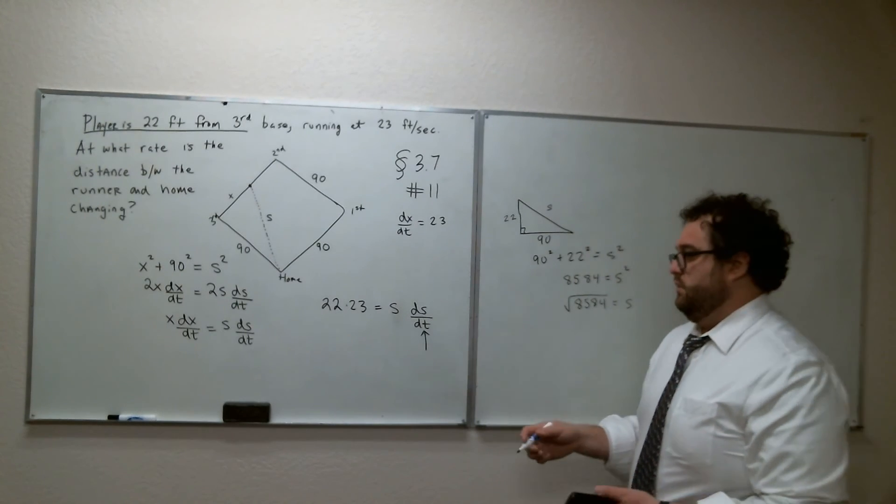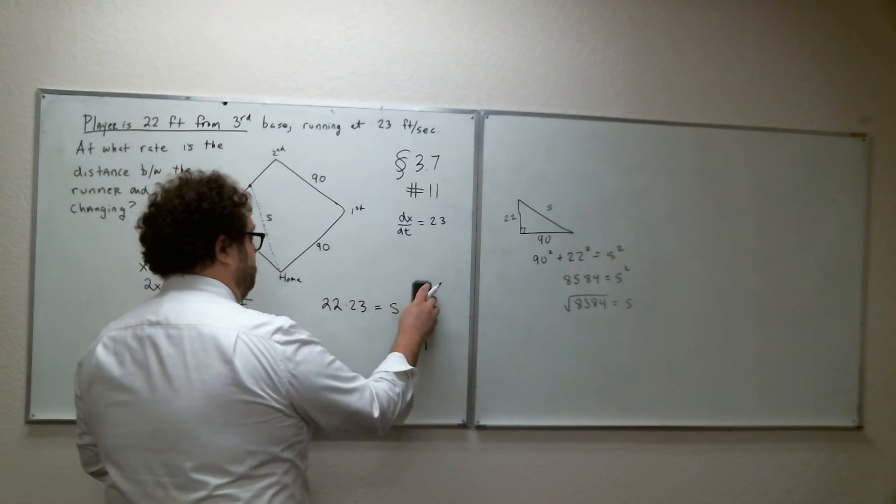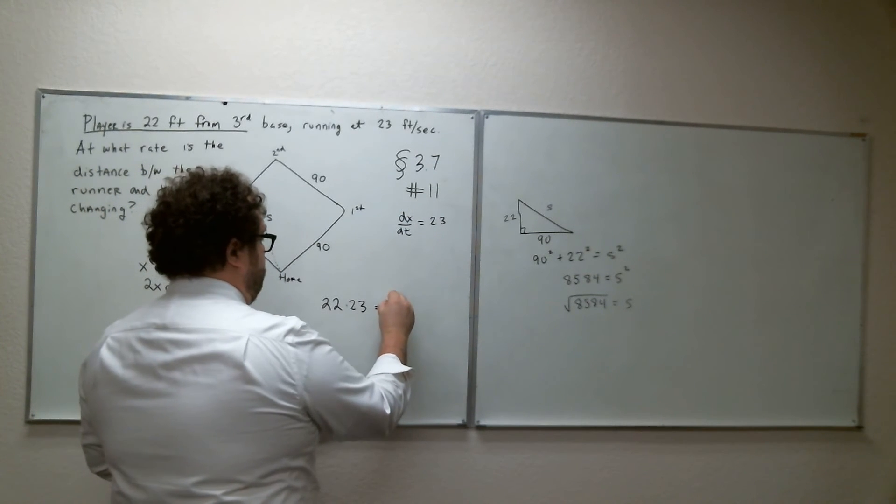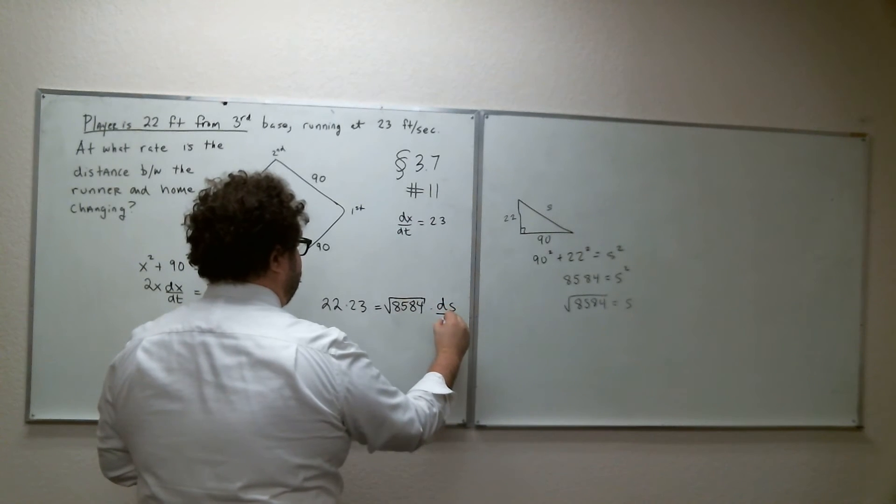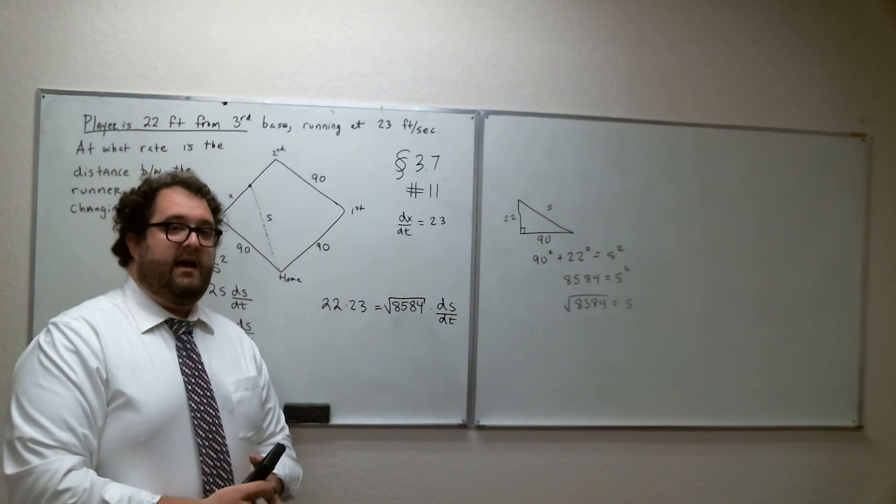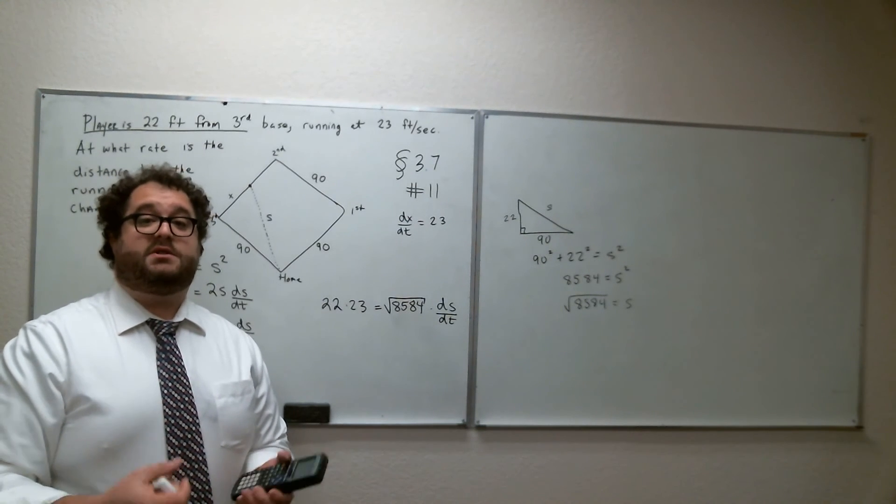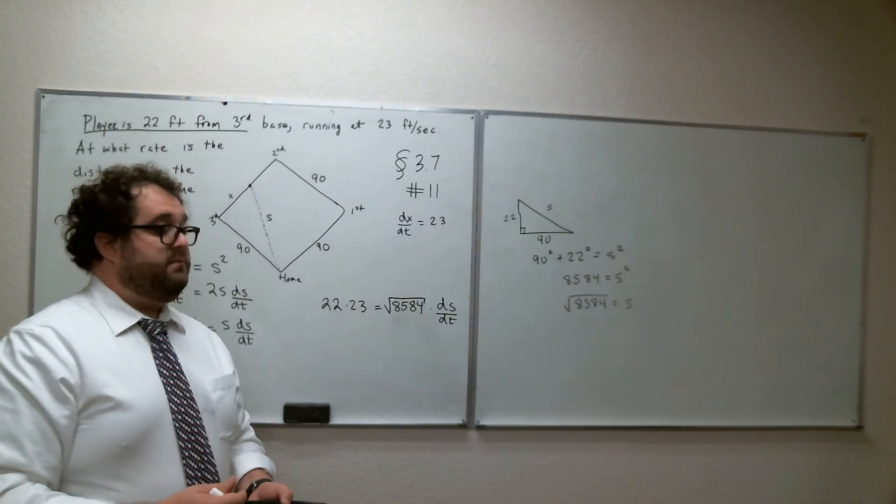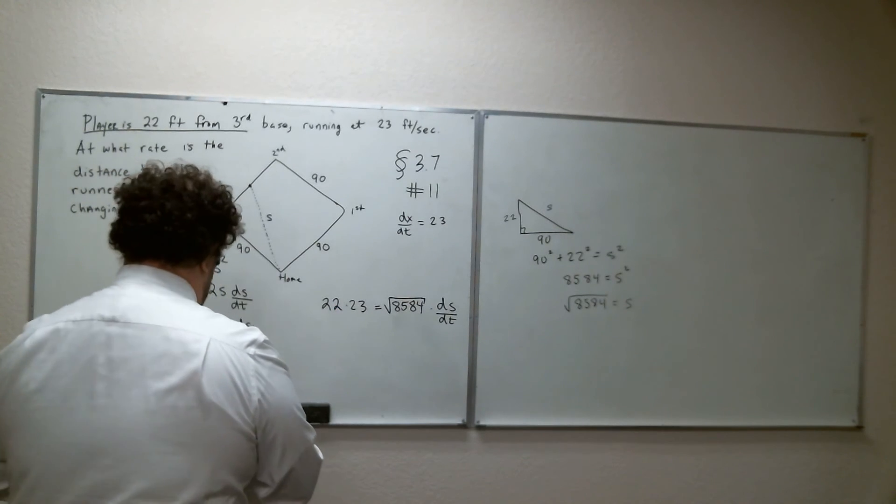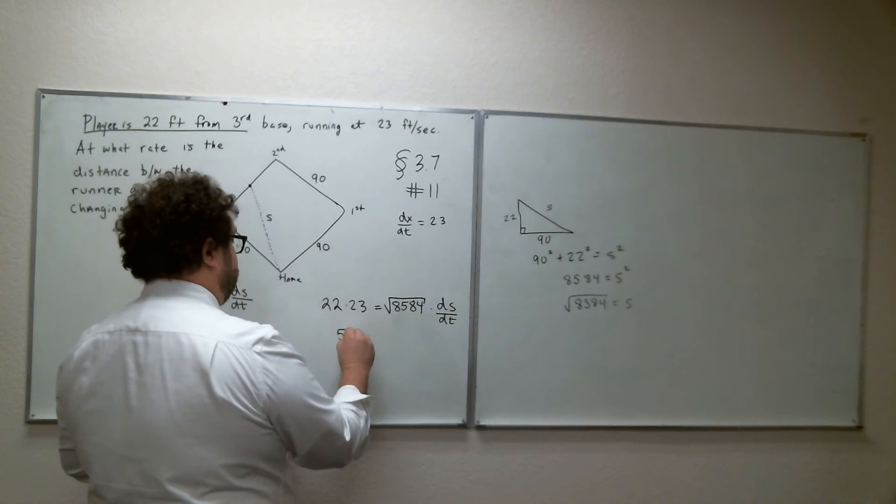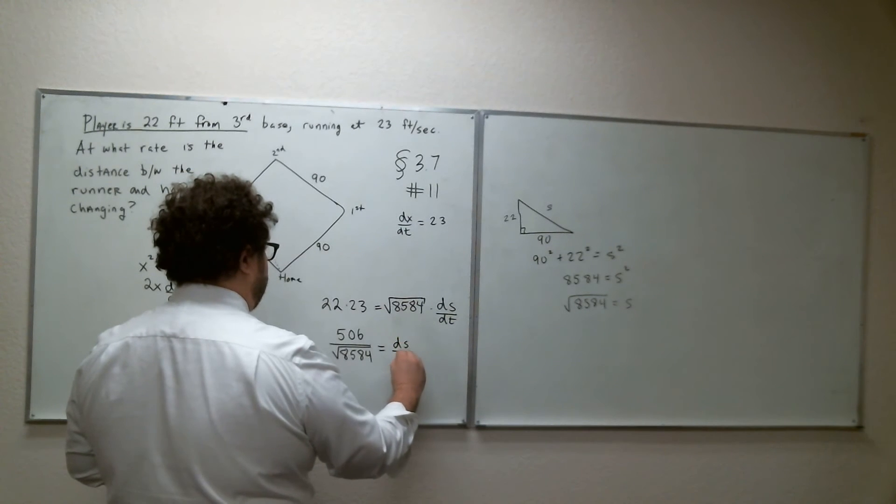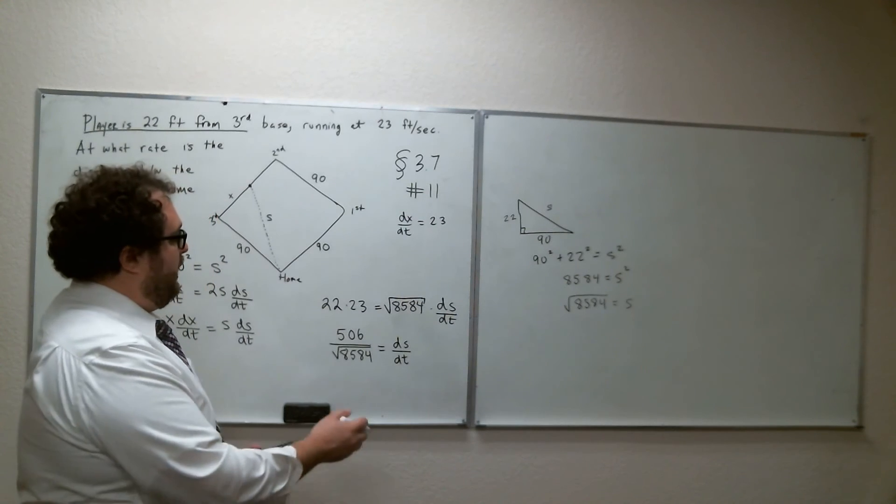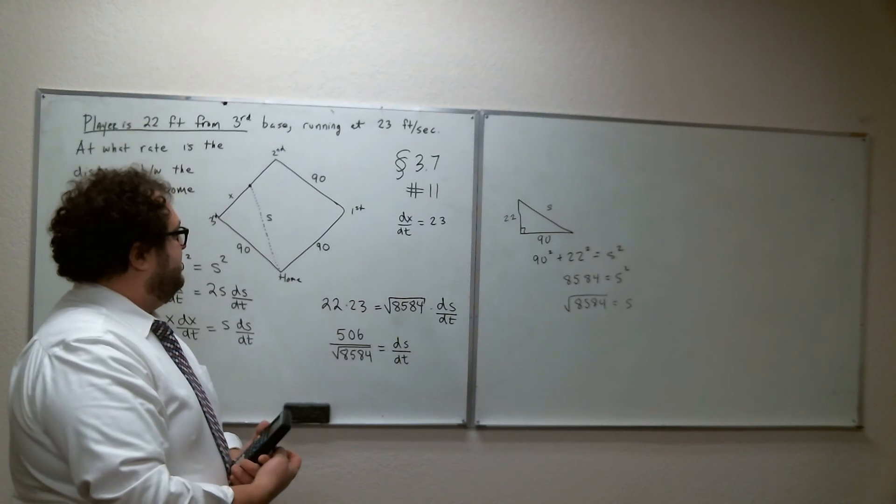And then I can make that proper substitution over here. I know what S is. It's the square root of 8584 times DS/DT. And now you can see I have an equation with only one unknown. I can easily solve for that one unknown by dividing both sides by that radical. So I can say that 22 times 23, which is 506, divided by the square root of 8584, is equal to DS/DT. So that is how fast, that's the exact solution for how fast S is changing.